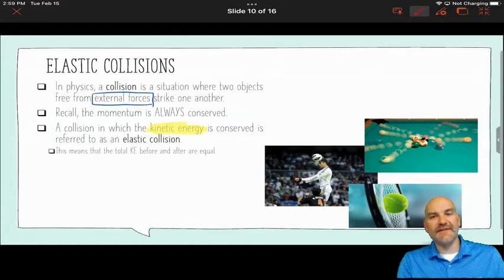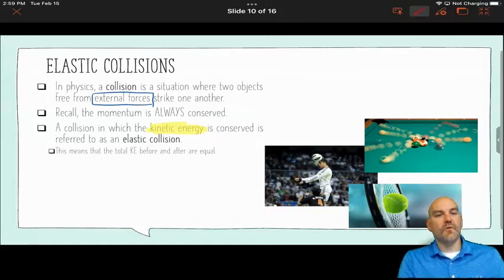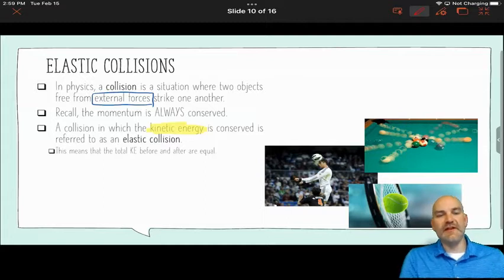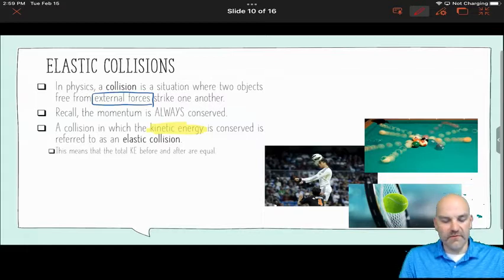Okay, so recall from a couple previous slides that momentum will always be conserved. Now, once we try to determine the types of collisions, what we're going to focus on is the kinetic energy, right? So how does kinetic energy respond in the collision? Now, if a collision occurs and the kinetic energy is conserved, we call that an elastic collision. So what this means is that the total kinetic energy before and after are going to be equal. So in addition to the momentum being equal before and after, the kinetic energy will be equal before and after.